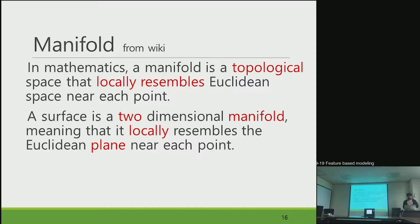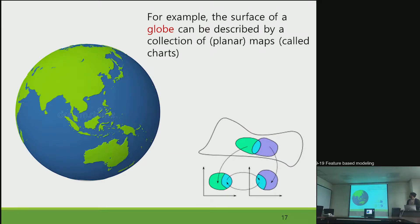So I show an example. For example, the surface of a globe can be described by collection of planar maps. Like the whole globe is a spherical form, but how we read the map in the planar form. So the whole surface of a globe can be converted into a collection of maps.